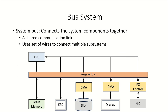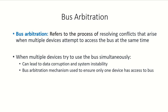The system bus connects the system components together, so we can say that it is a shared communication link. All the units of the system — the CPU, the main memory, the keyboard, the secondary storage, the monitors, the network lines — are connected together for communication through the system bus. The system bus uses a set of wires to connect all these multiple subsystems.